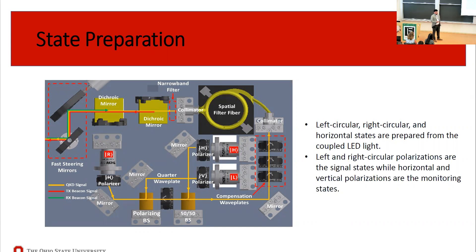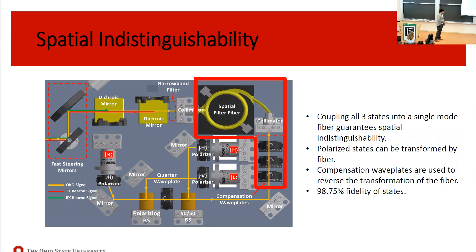Although we can create and send states to the receiver, it's not that simple with three separate LED sources. Since we encode information only in polarization, the other photon modes — spatial, temporal, and spectral — must be indistinguishable to prevent side-channel attacks. For spatial indistinguishability, we couple all three sources into one single-mode fiber. Since fibers can alter polarization, we use compensation wave plates — two quarter-wave plates and a half-wave plate — to compensate, achieving 98.75% state fidelity.